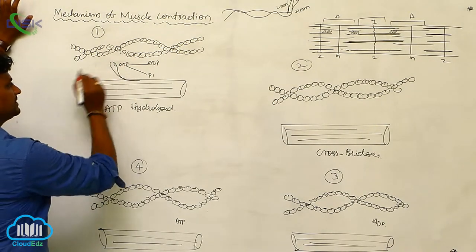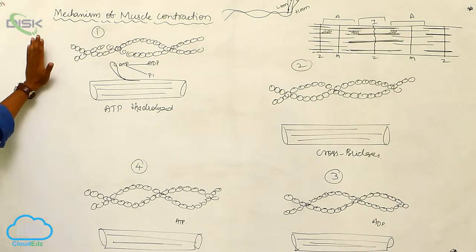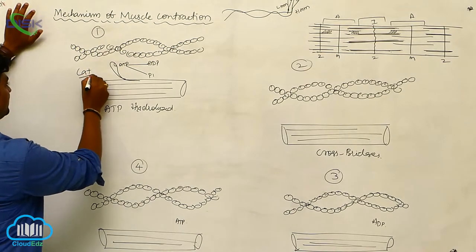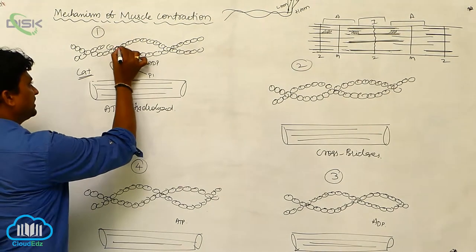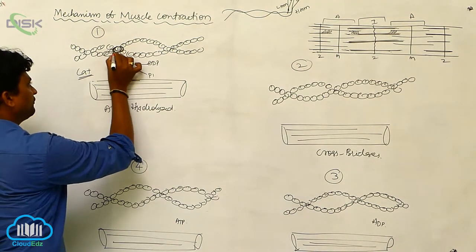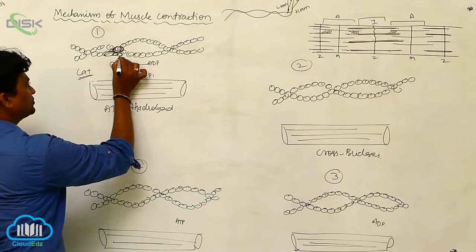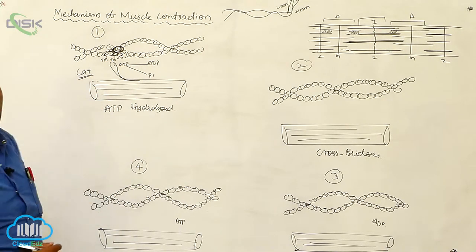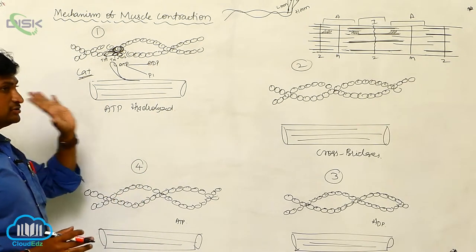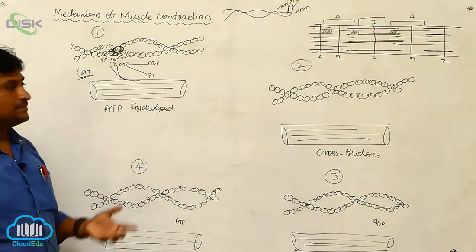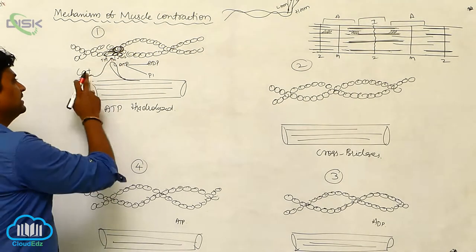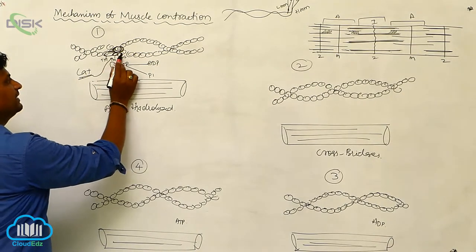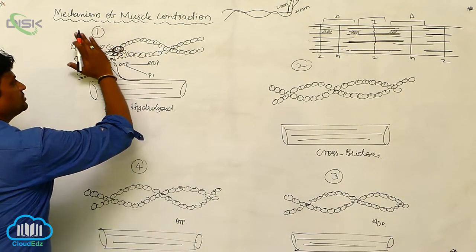When signals are received from the motor neuron, the muscle gets activated in the presence of calcium ions. The sarcoplasmic reticulum releases calcium ions upon receiving signals from the motor neuron. These calcium ions go and bind with the TnC (troponin C) center. This causes conformational changes to appear in the troponin filament, moving it out of the way.